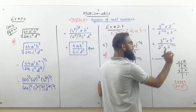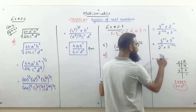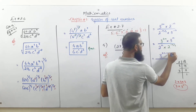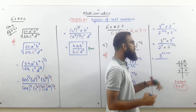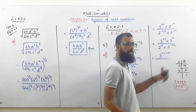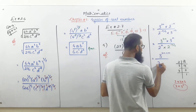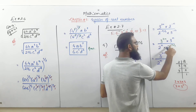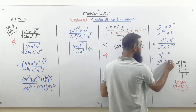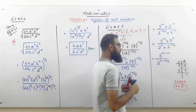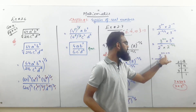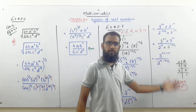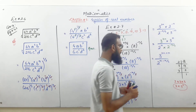Next step: when the bases are the same and values are being multiplied, the powers add. So for base 3: write 3 once and add powers — 2n plus n gives 3n. For base 2 in the denominator: write 2 once and the powers subtract — n minus n/2.